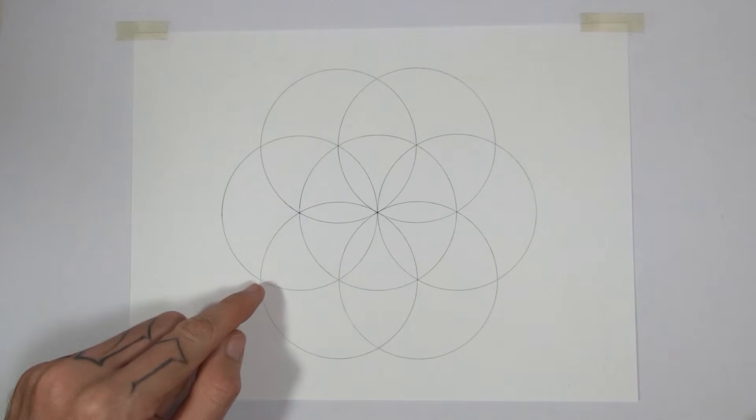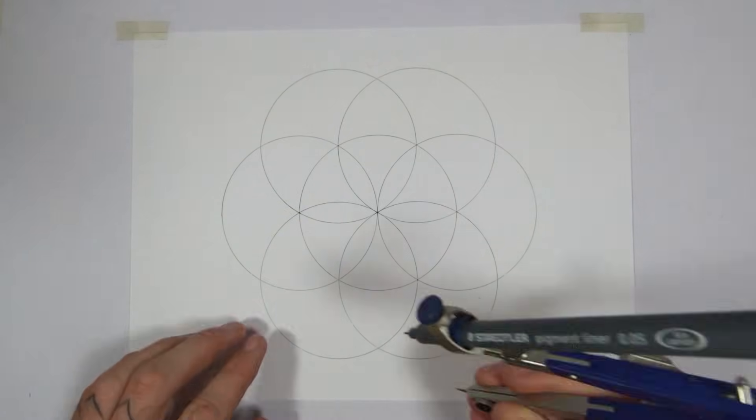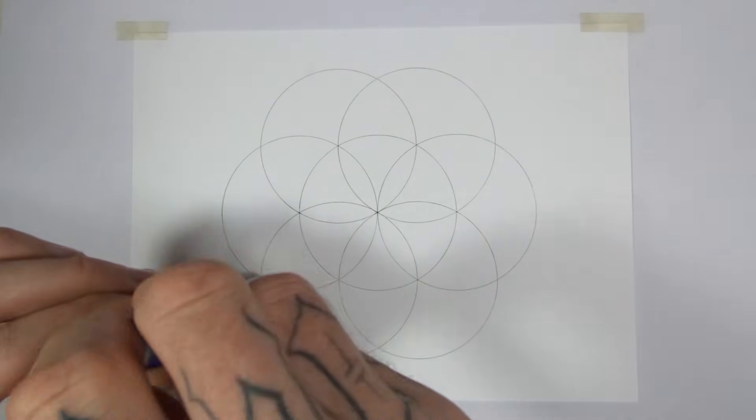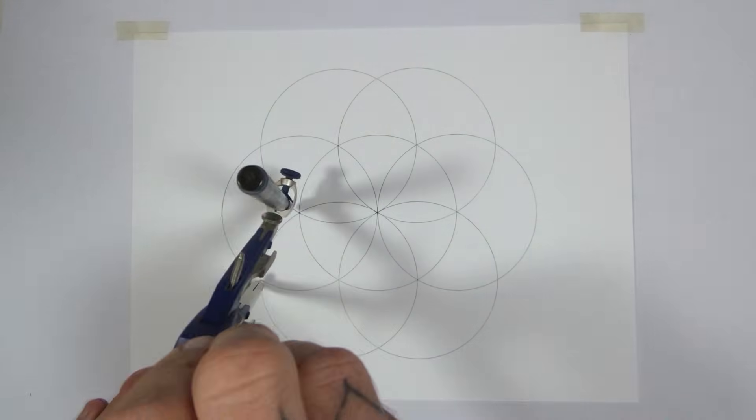So if I do the exact same thing with this intersection here, work my way around and I'm going to draw the seed of life again on the left circle and then I'll draw it again on the right circle.